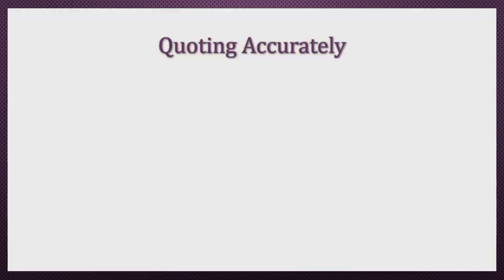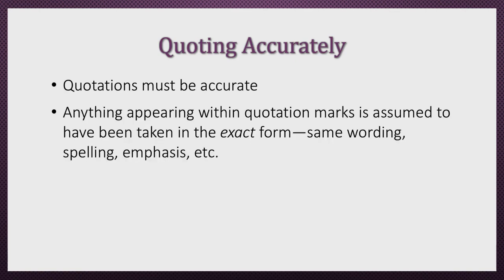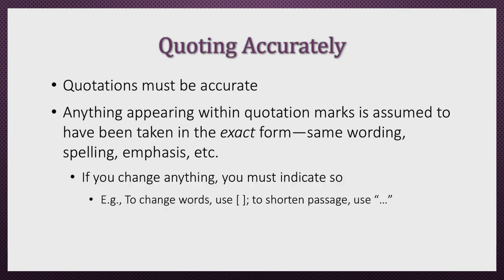One more point on quoting: direct quotations must be accurate. This means that anything that appears within quotation marks is assumed to be exactly the same as the original source — same wording, same spelling, same text emphasis like italics, etc., even if there is a mistake in the original source. If you change any part of the quote, like changing words or cutting out words to shorten the passage, you must indicate that somehow. Consult the APA Publication Manual for guidance.